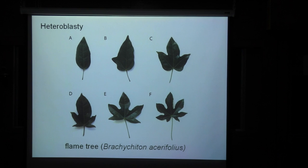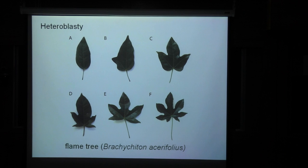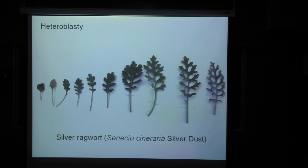It turns out that this is a very labile feature of leaf form. Even within a single plant, we may observe leaves of very different forms, such as in the flame tree. Those are leaves picked from the same tree and seem to be located there without any rhyme or reason. Some are multi-lobed, some are simple, and in this case there is no gradient to them. Another example is in the silver ragwort, where some early leaves tend to be simple and later ones are very, very dissected.